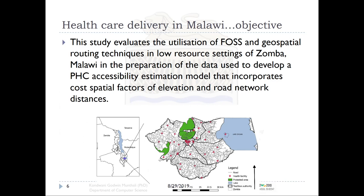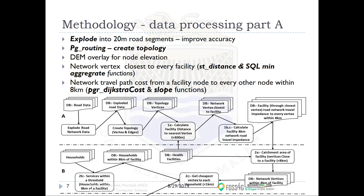The methodology had three components — parts A, B, and C. At the center of it all, we had PG routing as an algorithm running pgr_dijkstra with cost and also slope incorporated.